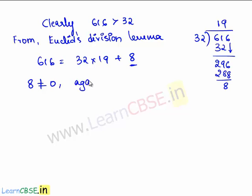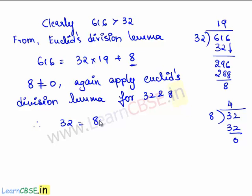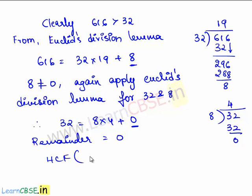Since the remainder 8 is not equal to 0, we again apply Euclid's division lemma for 32 and 8. Now let us divide 32 by 8. 8 goes into 32 exactly 4 times. Therefore, 8 times 4 is 32 and the remainder is 0. Therefore, 32 can be written as 8 times 4 plus 0. Since the remainder obtained is 0, the HCF of 616 and 32 is equal to 8.